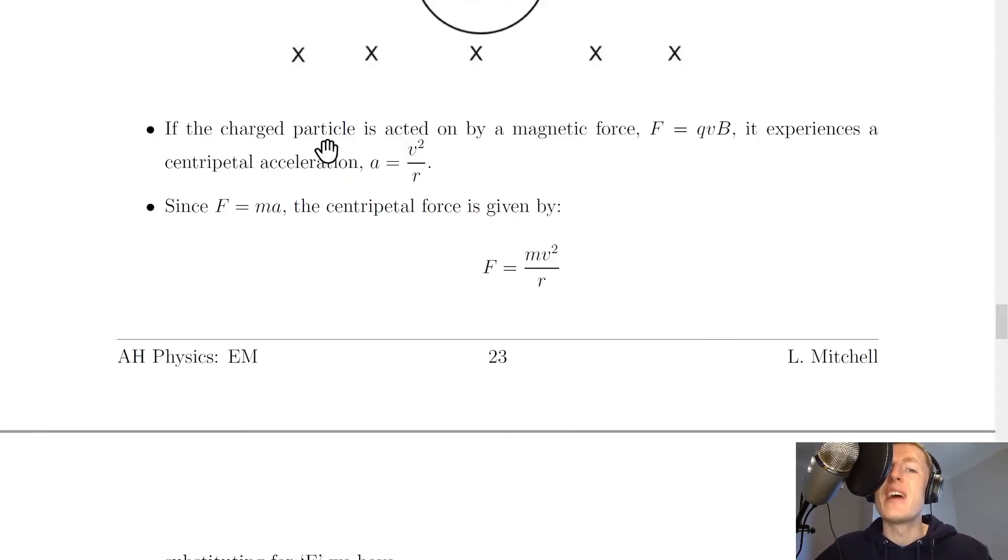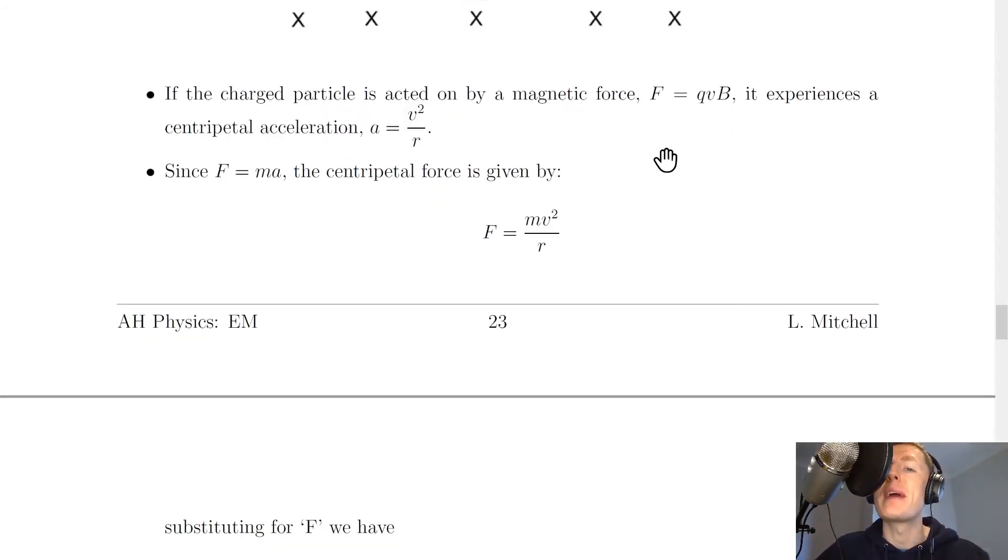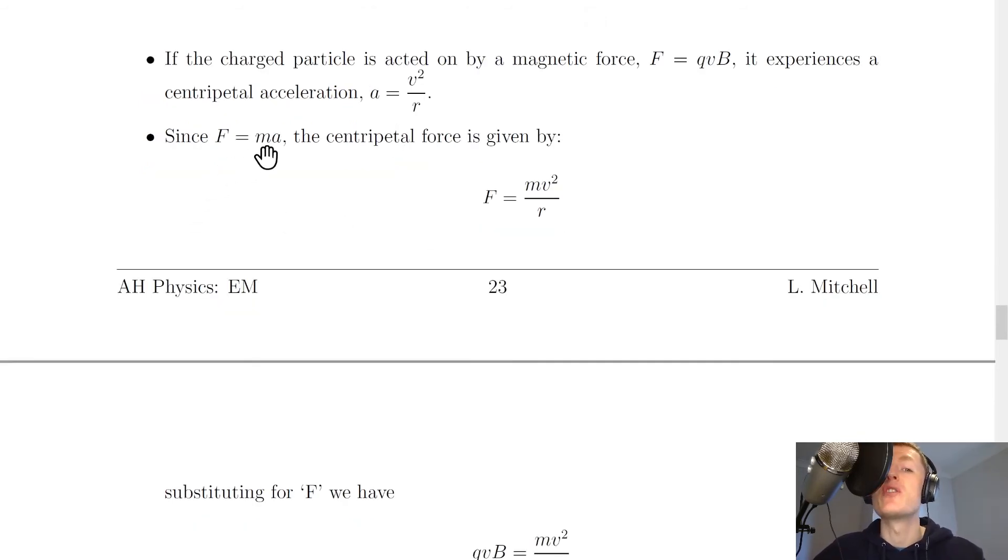Going back to the notes now, it says that if the charged particle is acted on by a magnetic force, which is F equals qvB, it experiences a centripetal acceleration, which we know from the rotational motion topic, a equals v squared over r. Since F equals ma, newton's second law, we can say the centripetal force is given by F equals mv squared over r.